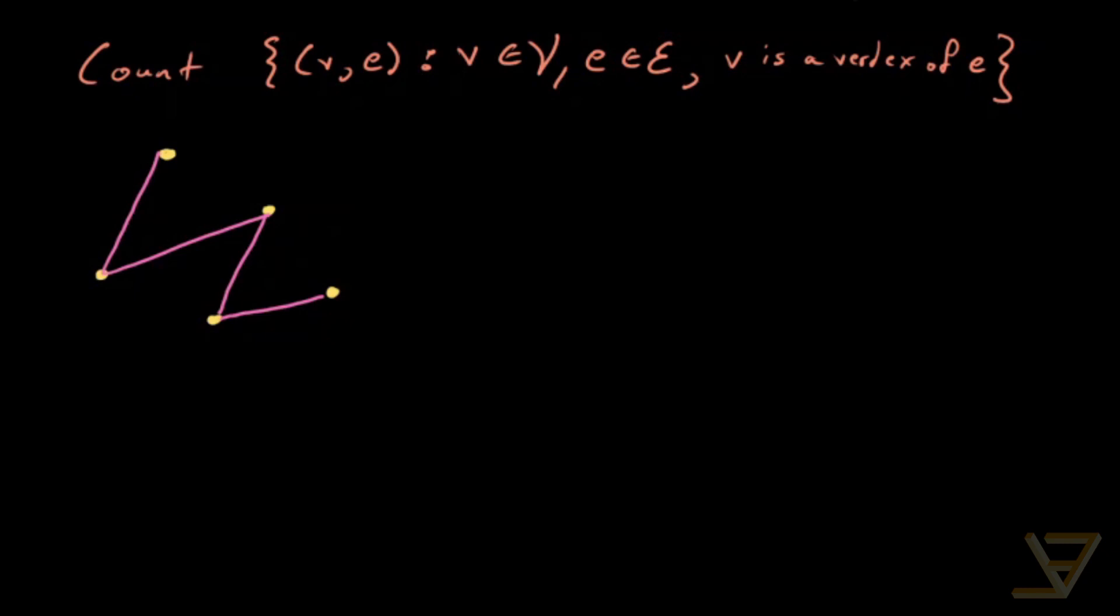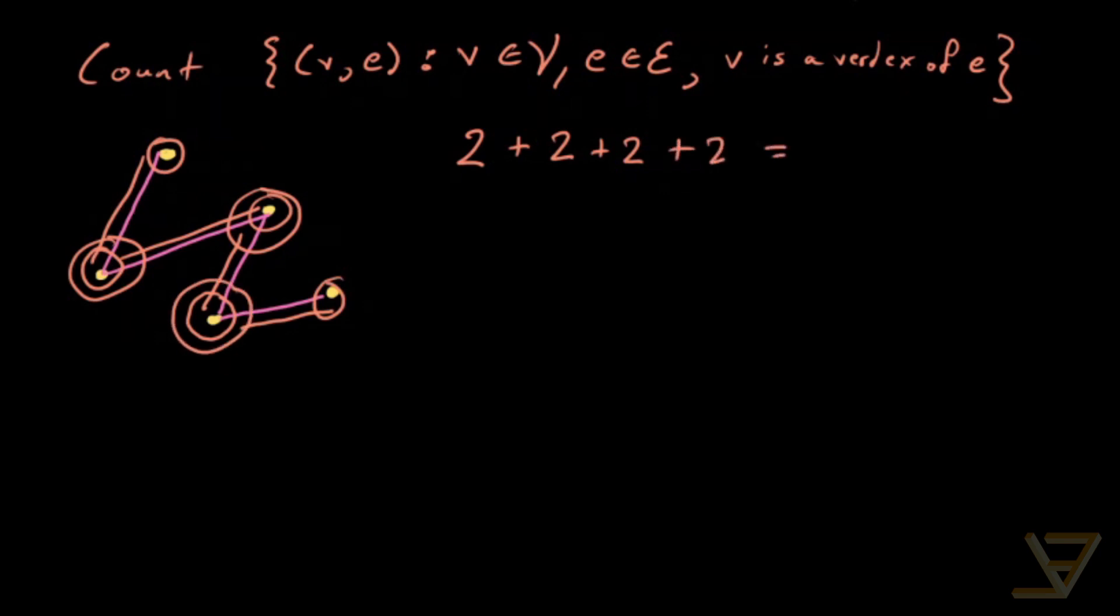So there's a couple of ways we can do this. One is by iterating through the edges. We've got this edge and one vertex, two vertices, so we've got two pairs here. Then we've got this edge with this vertex and this vertex again, so two again. Then this edge with this vertex and this vertex, so again two. And finally this edge with this vertex and this vertex, so again two. So that's equal to two times the number of edges.